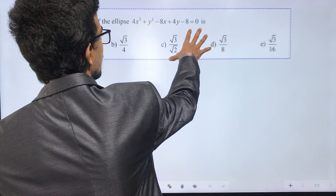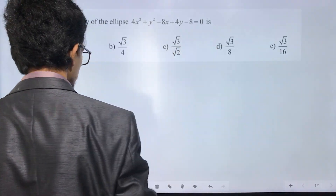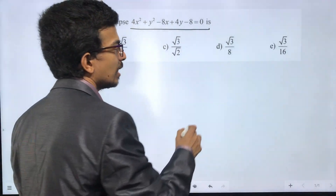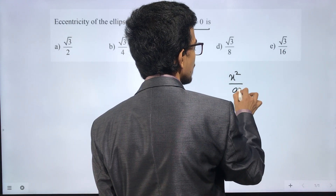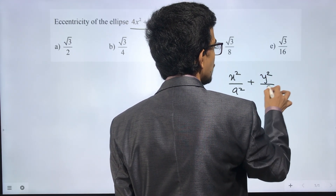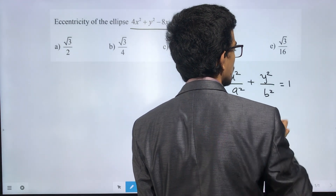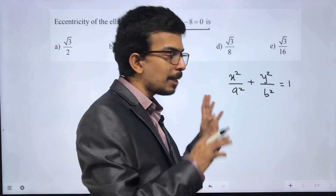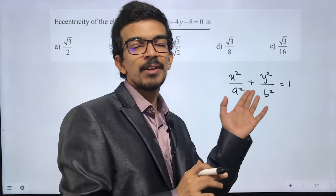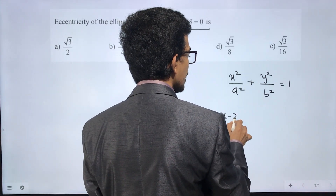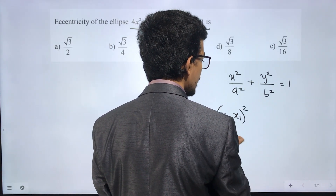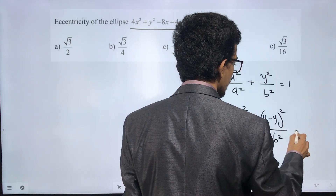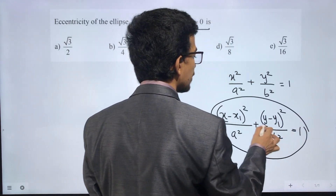Question number 11: the eccentricity of the ellipse. The equation of the ellipse is: (x minus x1) whole square divided by a square, plus (y minus y1) whole square divided by b square, equals 1. Now we will expand this formula.